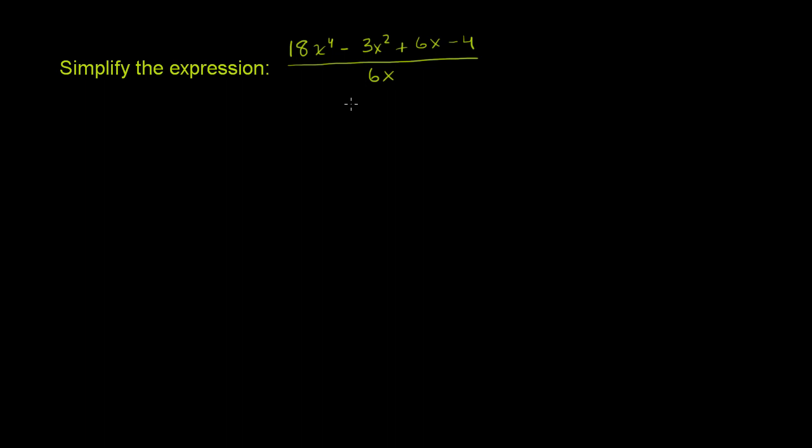There's a couple of ways to think about this. They're all really equivalent. You can view this as being the same thing as 18x to the 4th over 6x plus negative 3x squared over 6x, or minus 3x squared over 6x plus 6x over 6x minus 4 over 6x.